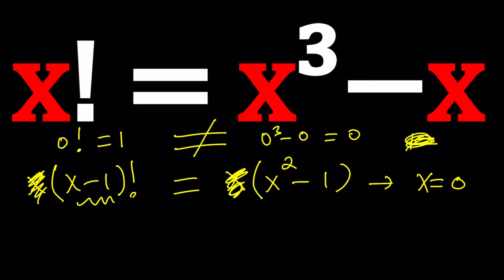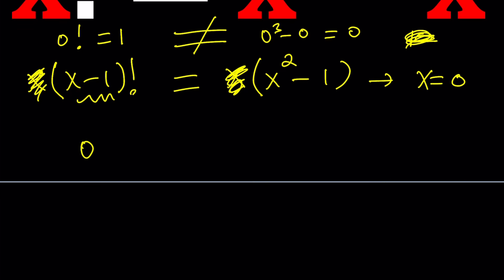Because at this point, x cannot be 1 either. If x is 1, we get 0 factorial equals 0. Again, that is incorrect. Now, some people say, like, 0 factorial should be 0, right? Because there's nothing to multiply. Well, there's always 1.